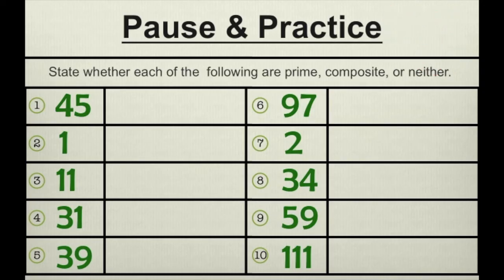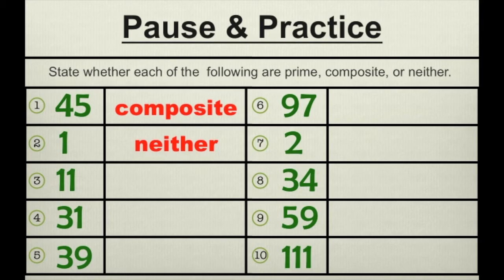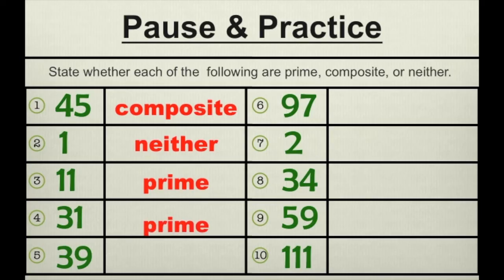So let's take a look at our answers. Number one is composite. Number two is neither — remember, 1 is a very special case. It is neither prime nor composite, because it only has one factor, itself. Number three, 11, is prime. Number four, 31 is prime.